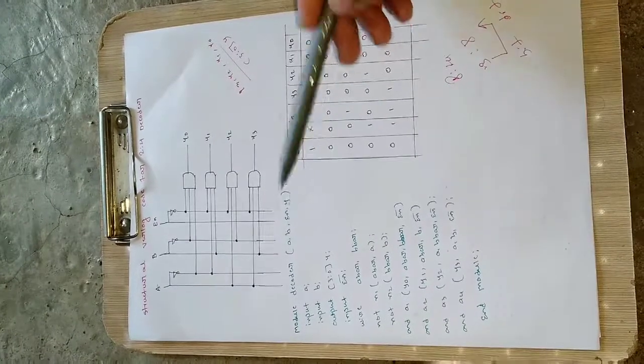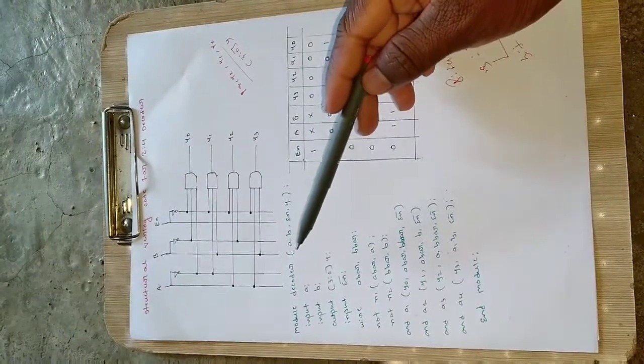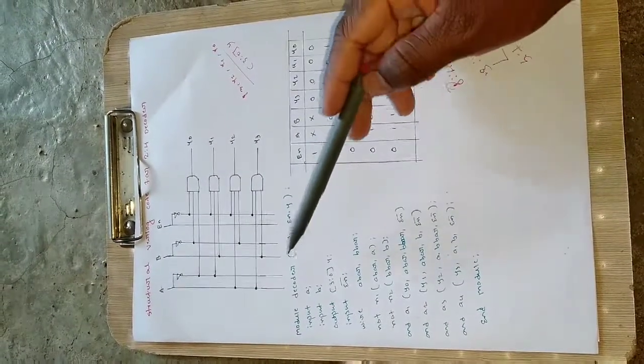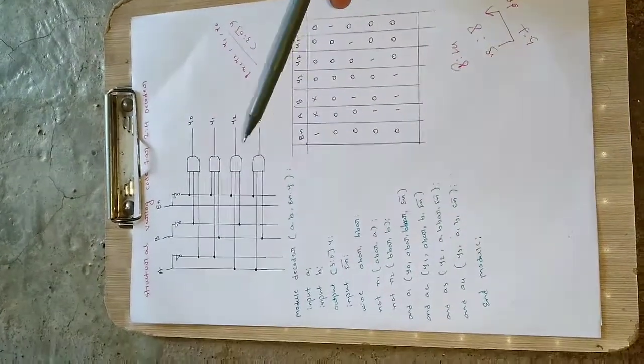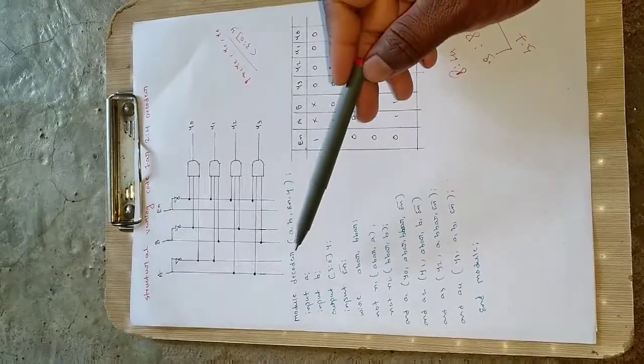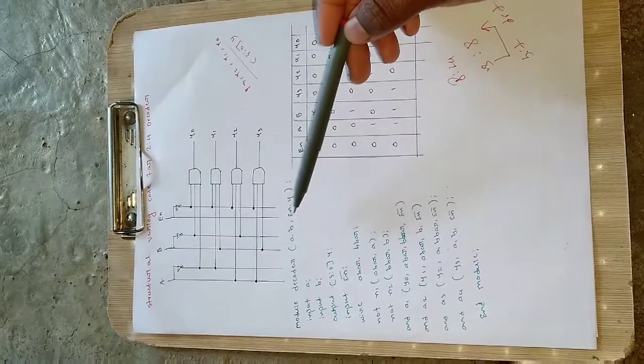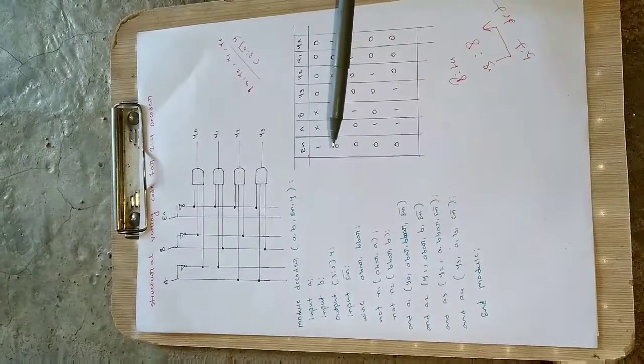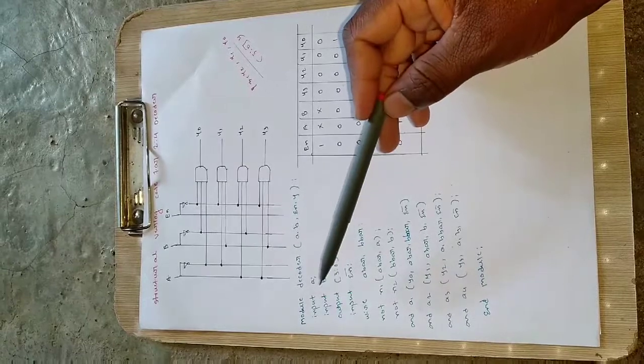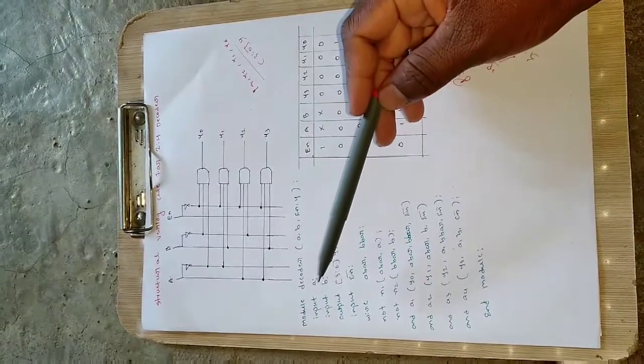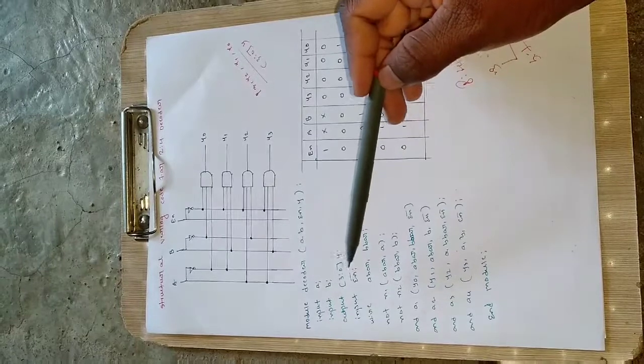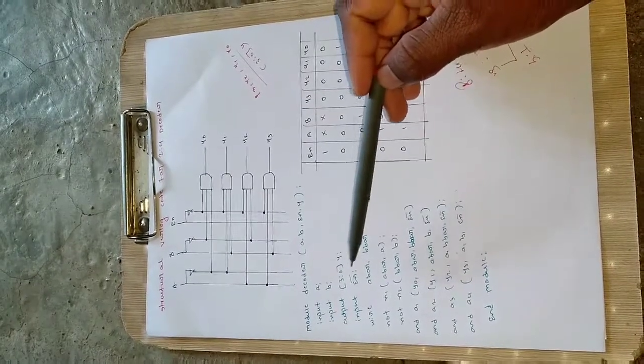Now we will see how we can write the code. Module decoder - define the inputs and outputs here. This is user-defined, you can give anything of your choice. A and B are the inputs, enable is also input, and Y is the output. Define inputs and outputs separately: input A, input B, output [3:0] vector Y.